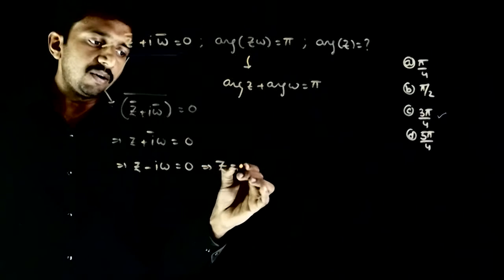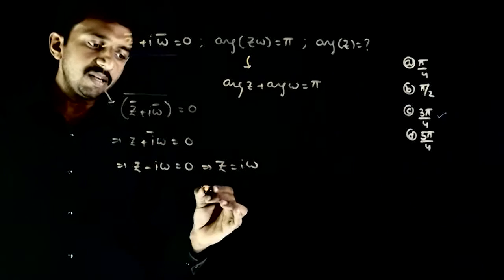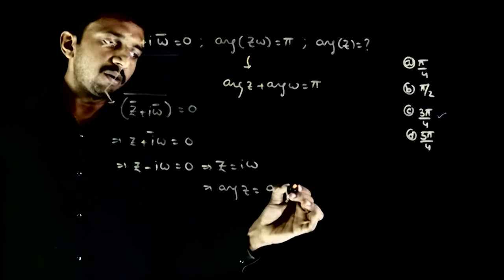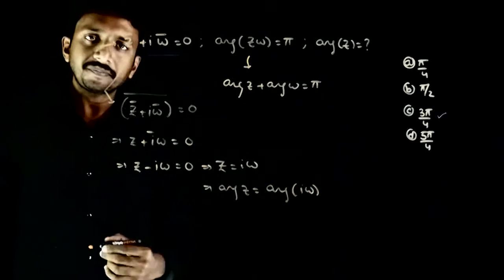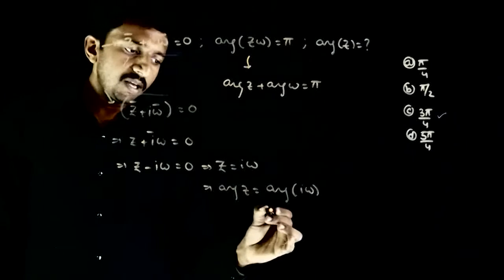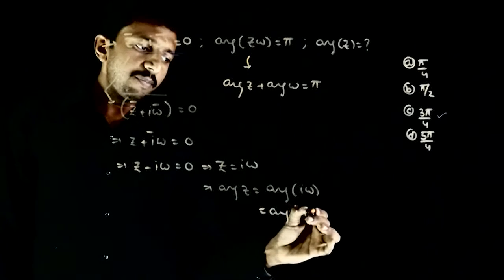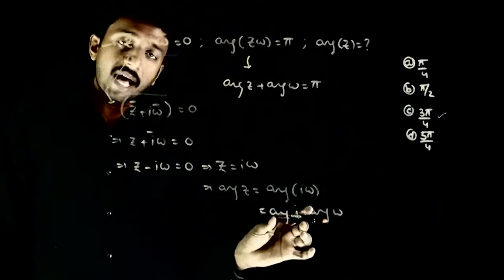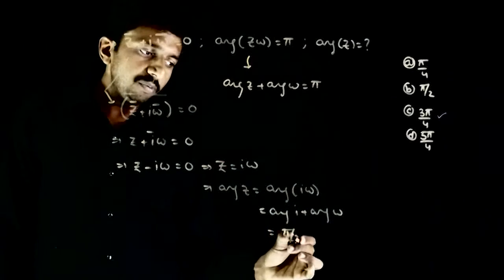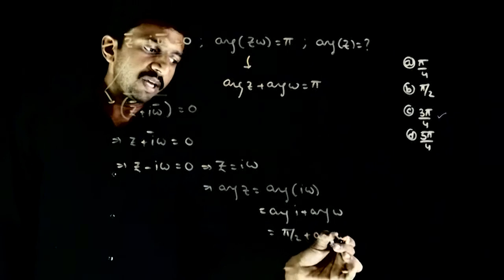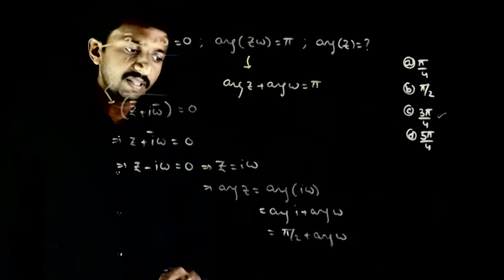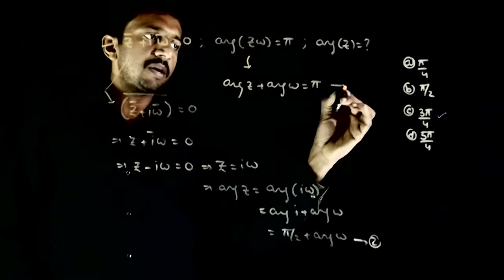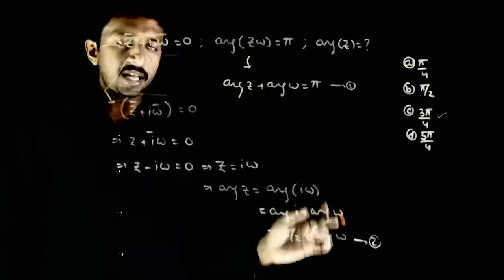This implies z is equal to iω. This implies argument of z is equal to argument of iω. That is equal to argument of i plus argument of omega. That is equal to π/2 plus argument of omega, since argument of i is π/2. So I got another equation in argument of z and argument of omega.